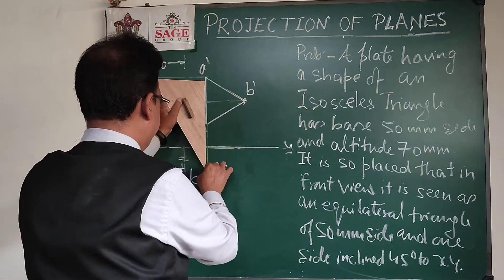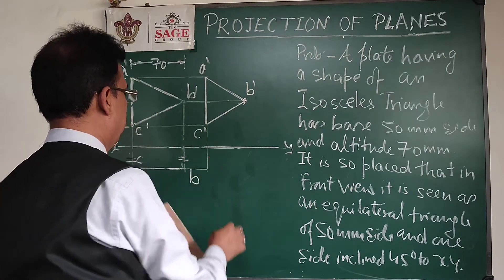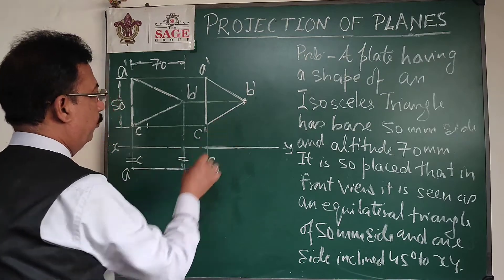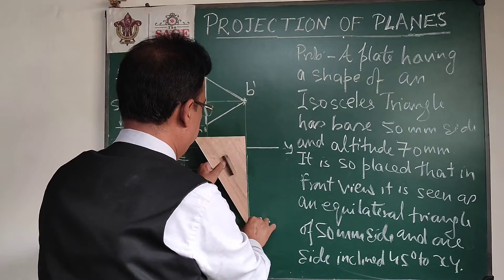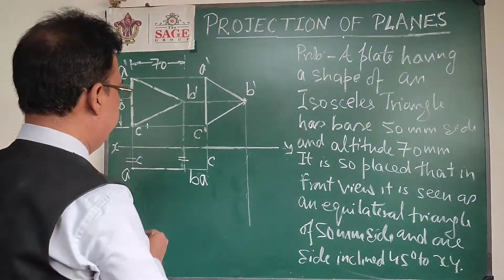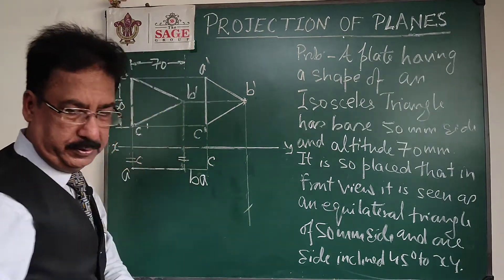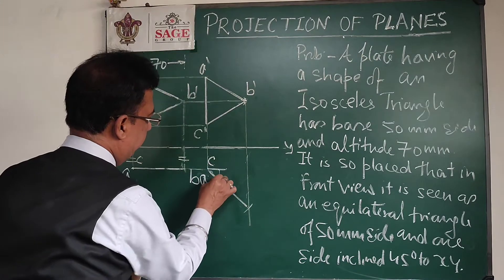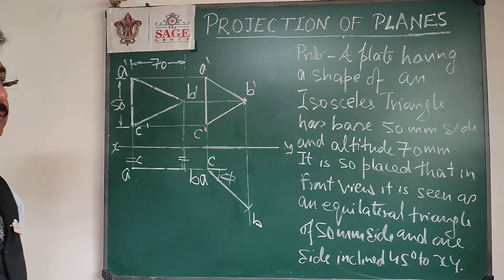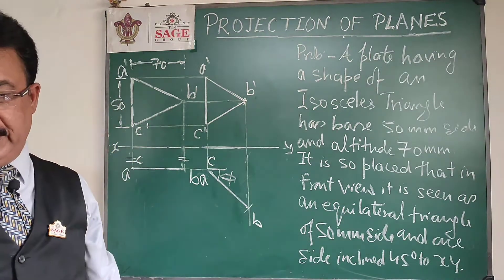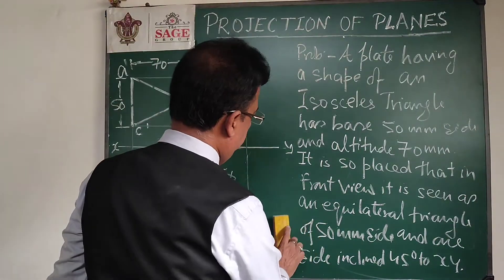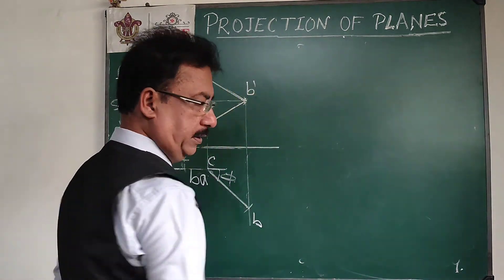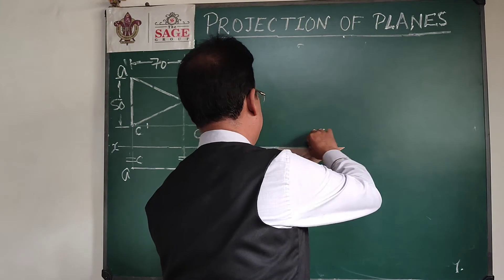With the help of this front view, I can draw the top view. Drop perpendiculars downward and draw a locus parallel to the reference line — points a and c will be on this line. Point b will be on its projector, so drop a perpendicular from b-dash. The length of the top view is not going to change, so from the first figure I pick the length of the top view and cut it on this projector. This gives the second top view, and this inclination is angle phi — the angle the surface of the plane makes with the VP.